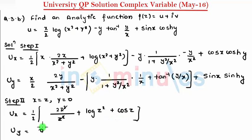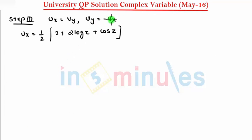We can substitute uy as minus vx, so I write vx is equal to 0. So step 4 is f dash of z is equal to ux plus i vx, so vx is 0.